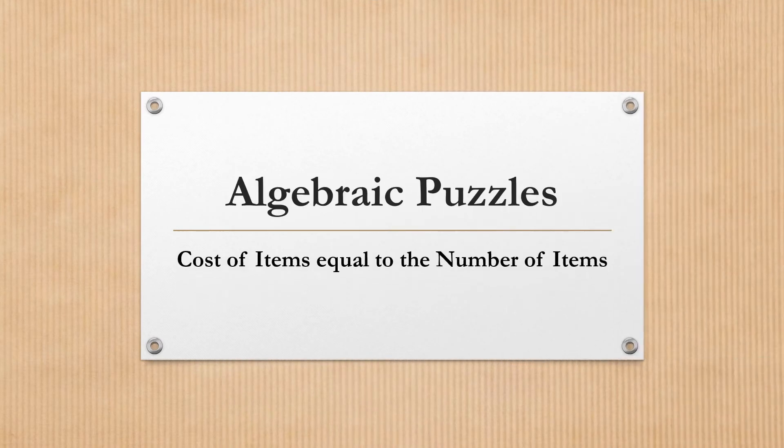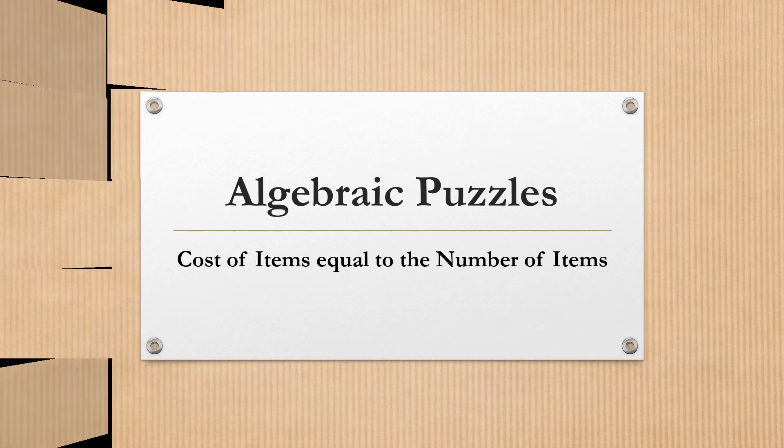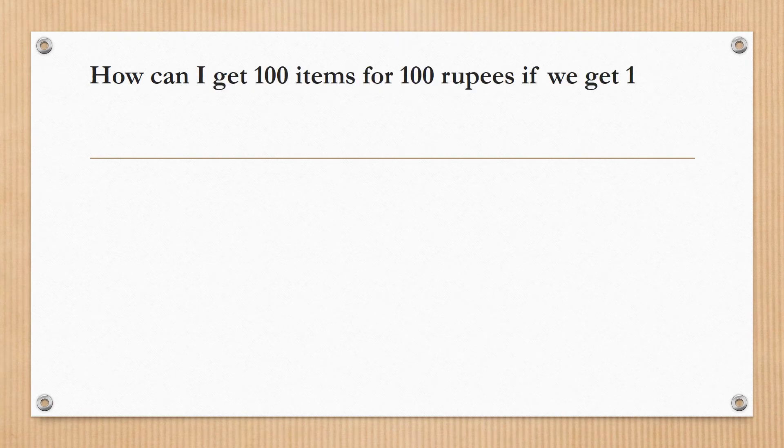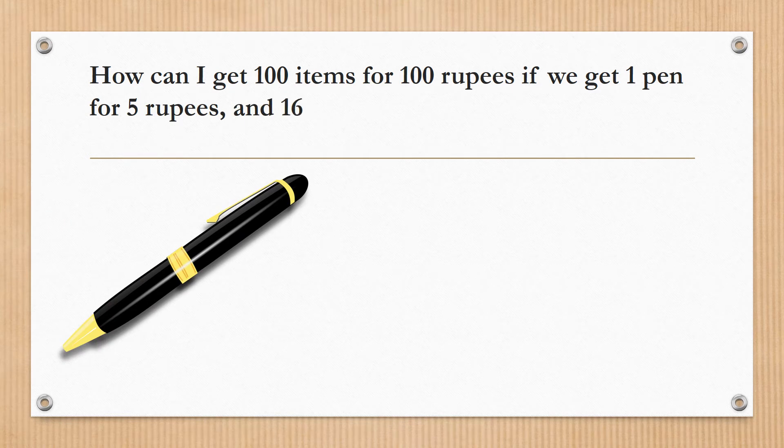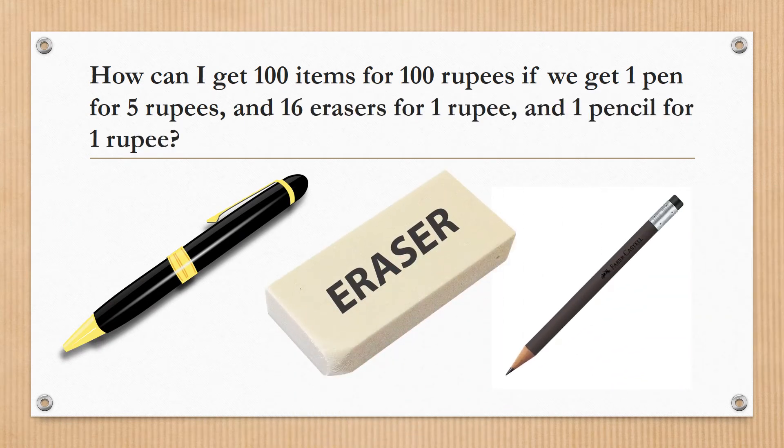Let's solve one more question of the same type. Cost of the items equal to the number of items. If the cost of 1 pen is 5 rupees, 16 erasers are 1 rupee, and 1 pencil is 1 rupee, then how can I get 100 items for 100 rupees?